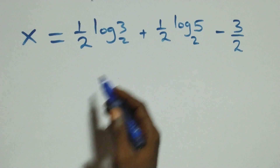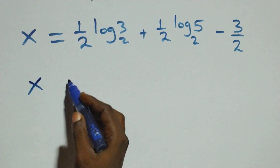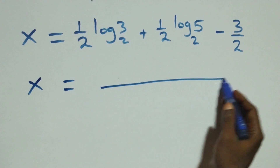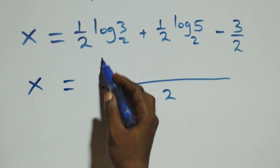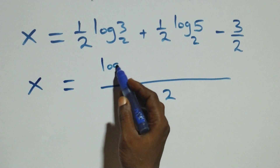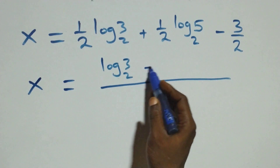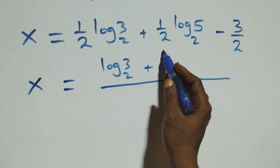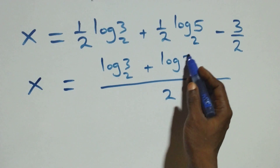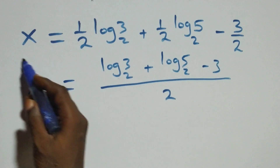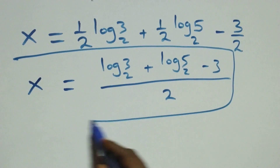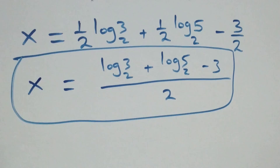Next step: we combine this together as one fraction over 2. We have x equals log₂3 plus log₂5 minus 3, all over 2.